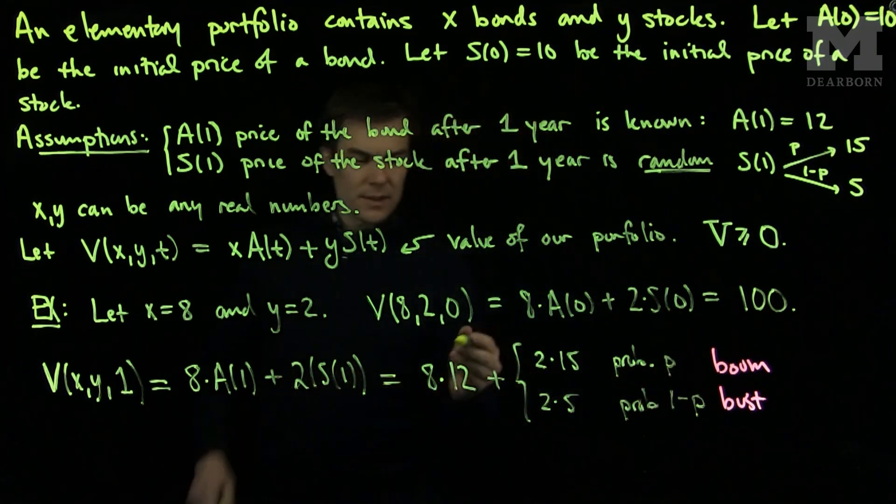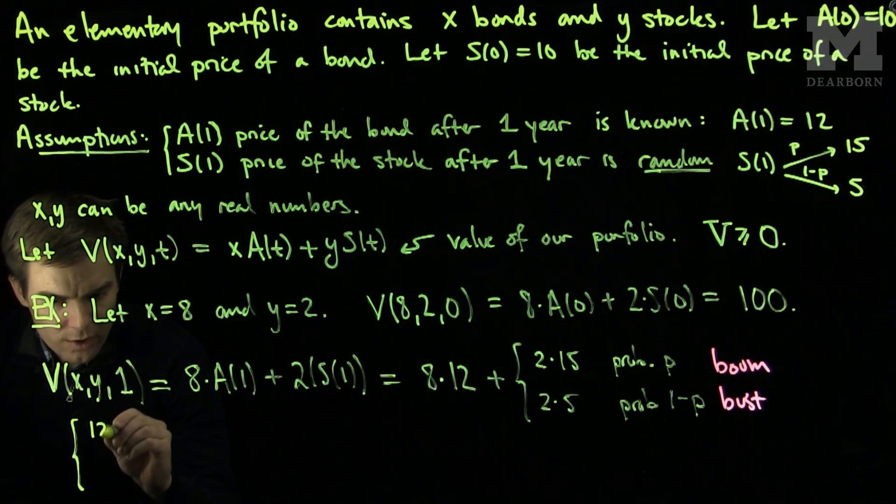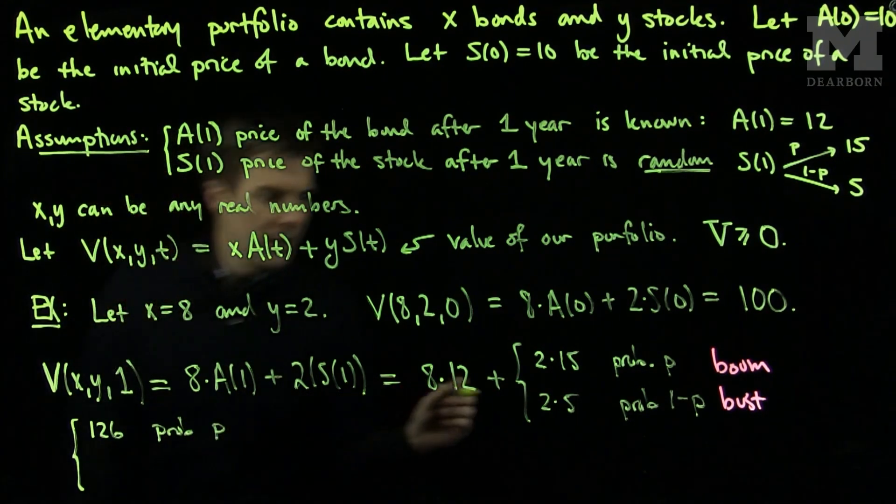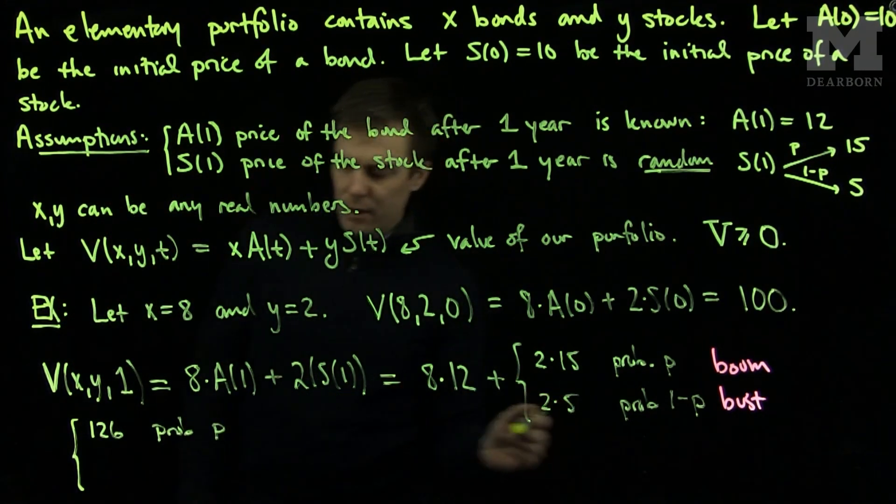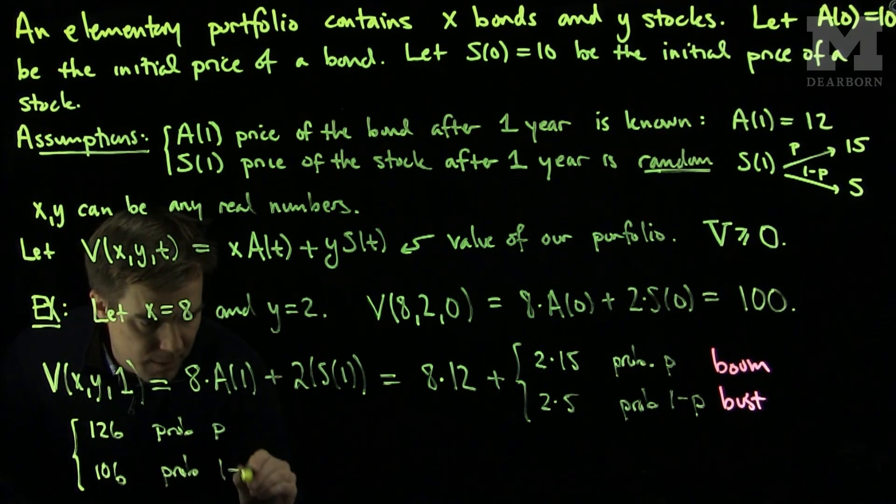So if we simplify this, this will be 96 and 30, right? So we will see that we'll have 126 with probability P. And this over here will be 10, so I'll have 106 with probability 1 minus P.